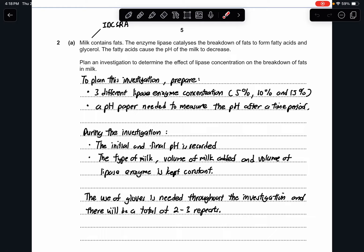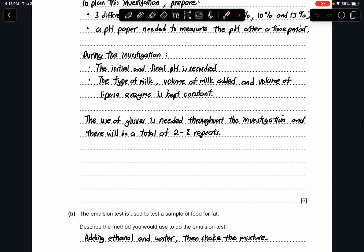And lastly, the use of gloves is needed throughout the investigation. And there will be a total of 2 to 3 repeats to ensure a safe and also a fair investigation. Where do I get my marks from? One mark is from here, a pH paper is needed. And then to measure the pH after the time, this will be the DV. This will be one of the methods. This is the constant variable and the safety precaution. And then the total of 2 to 3 repeats. This will be how I structure my answer to get the 6 marks.